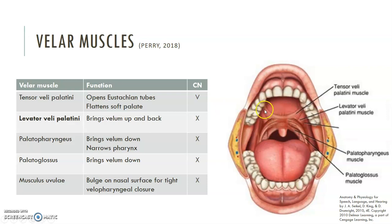The tensor veli palatini isn't really responsible for velopharyngeal closure, but it is helpful for opening the eustachian tubes. It flattens the soft palate on the nasal side, pulling it down, and that squeezes and pulls open the eustachian tubes. It's the only velar muscle innervated by cranial nerve 5 — everything else is innervated by the vagus nerve. The most important muscle for velopharyngeal closure is the levator veli palatini. It brings the velum up and back on the nasal portion — you can remember this because an elevator goes up.